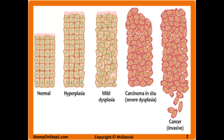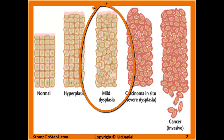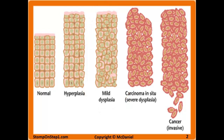Severe or prolonged hyperplasia or metaplasia can become dysplasia. Dysplasia is an abnormal change in the cell's characteristics, often resulting in the presence of cells in a more immature state than normal. It is usually accompanied by a loss of normal cell orientation, shape, and size. Eventually, we'll end up with cancer where the cells really don't look like normal tissue at all.